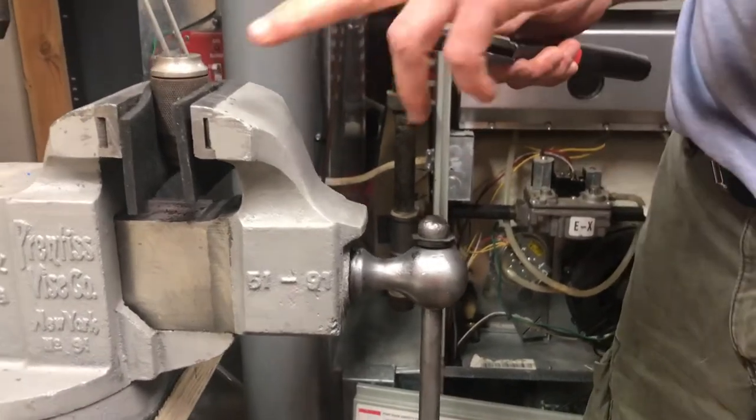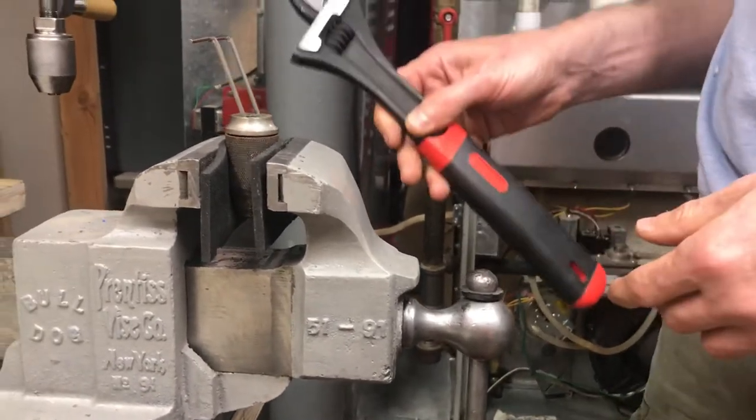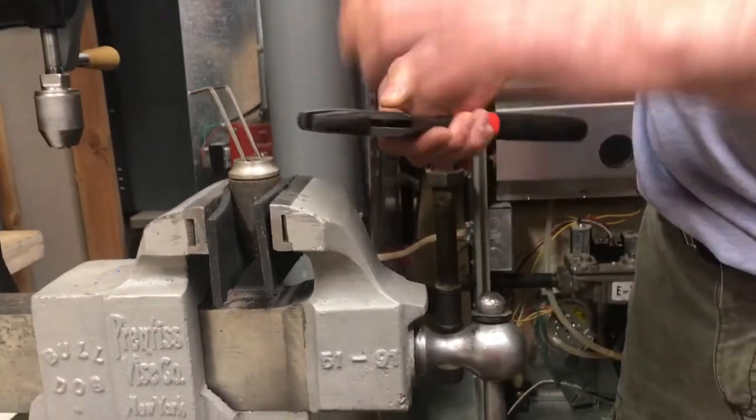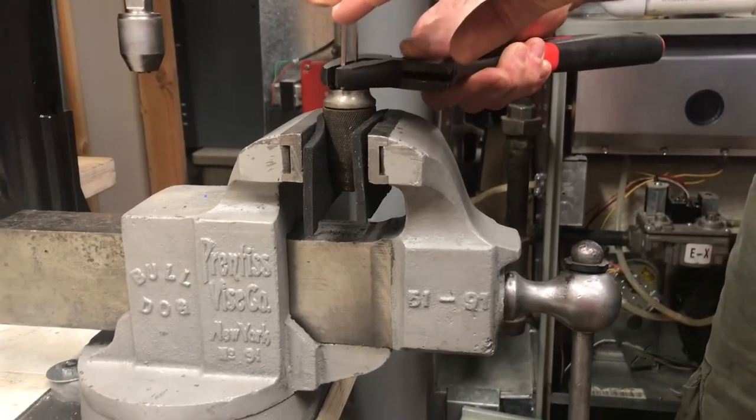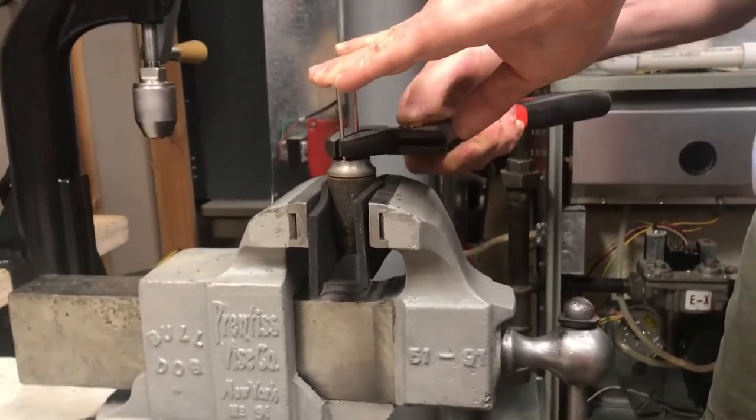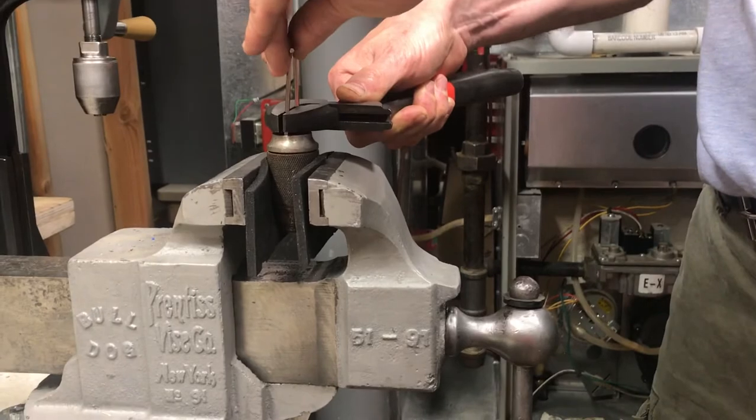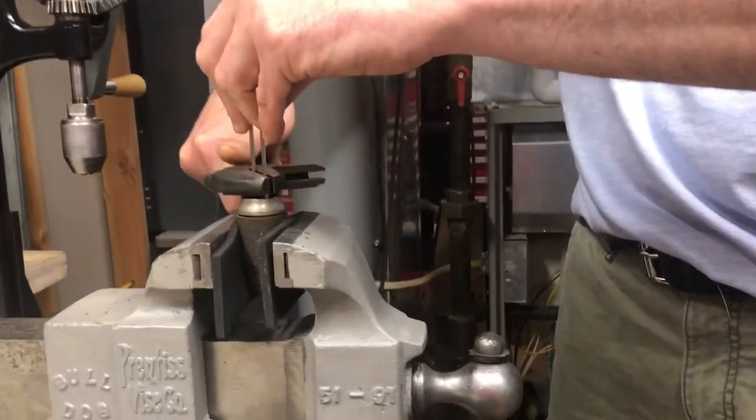what I did was I took two hex keys and an adjustable wrench. The hex keys go in the holes, and then the wrench squeezes them. And then all I have to do is just twist, and as you can see